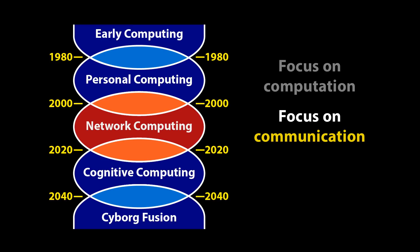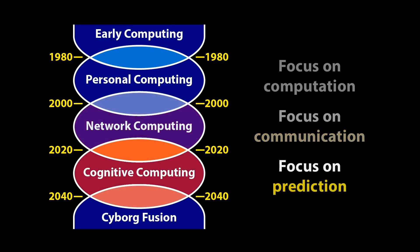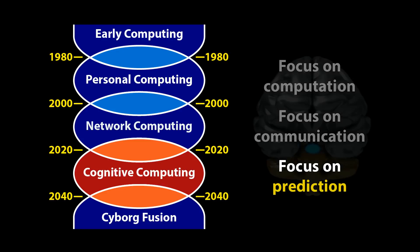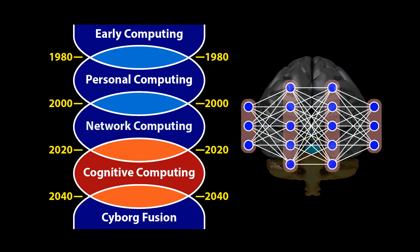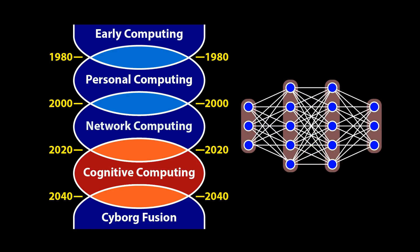However, today we are entering the cognitive computing age, with the focus expanding to include the use of computers for prediction in addition to communication and computation. Cognitive computing is primarily associated with the rise of artificial intelligence, and technologies like neural networks will allow computers to learn from sample data and predict appropriate responses when presented with data they've not encountered before.